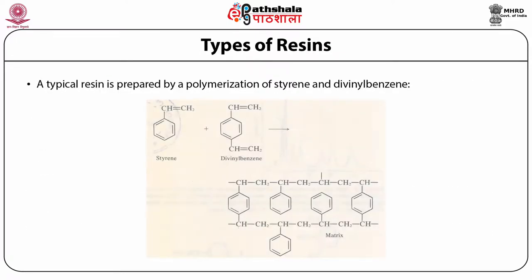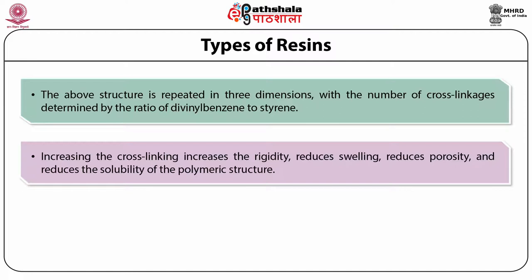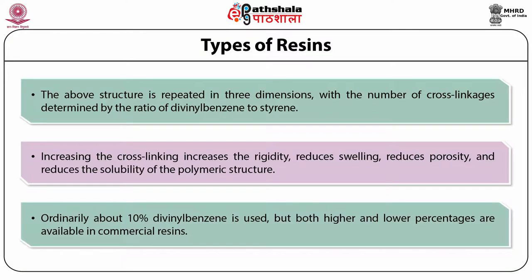A typical resin is prepared by a polymerization of styrene and divinyl benzene. The above structure is repeated in three dimensions, with the number of cross-linkages determined by the ratio of divinyl benzene to styrene. Increasing the cross-linking increases the rigidity, reduces swelling, reduces porosity and reduces the solubility of the polymeric structure. Ordinarily, about 10% divinyl benzene is used, but both higher and lower percentages are available. The particle size of the product is determined largely by the extent of mechanical agitation during the reaction, so that resin beads of numerous grade sizes are available.